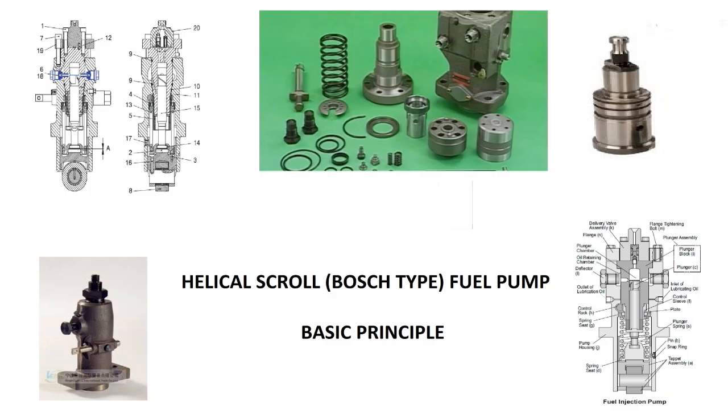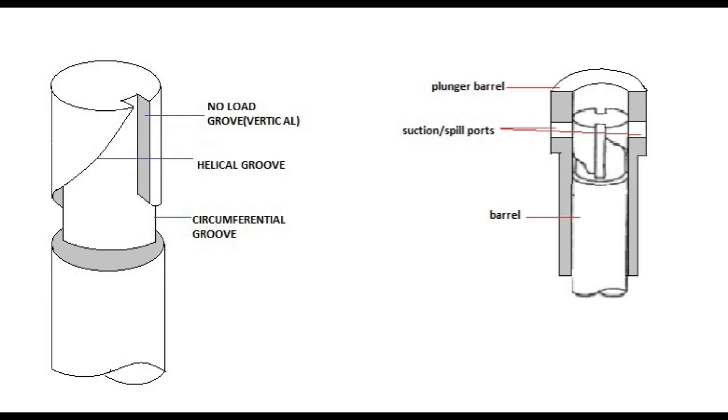Basic Principle of Helical Scroll Fuel Pump. Fuel has to be injected into the engine at a high pressure so that it atomizes correctly. Injection takes place over a short period of time and this period of time must be accurately controlled.